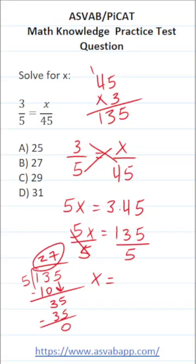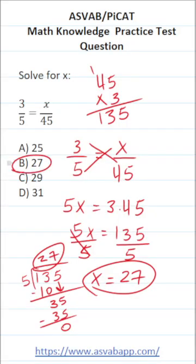So we have no remainder. We can see that 135 divided by 5 is 27. In other words, x is 27. So the answer to this one is B.